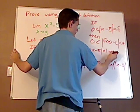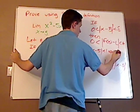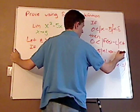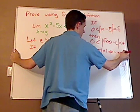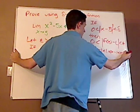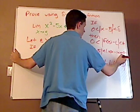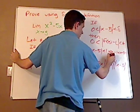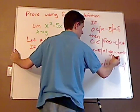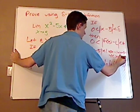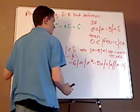you have -1 < x minus 5 < 1. When you do this right here, you get 4 less than x less than 6.